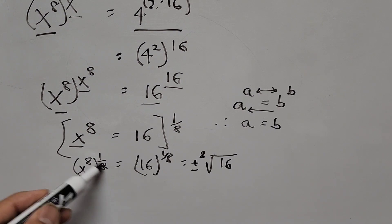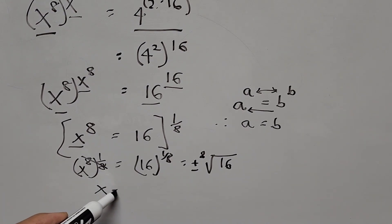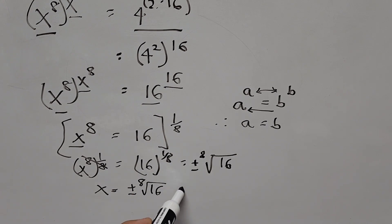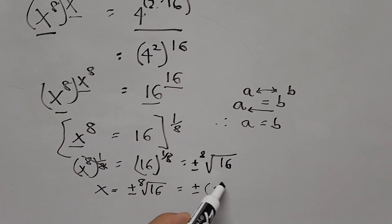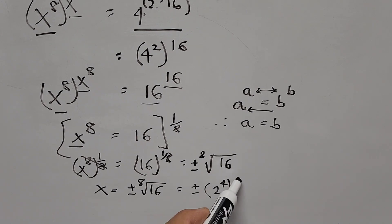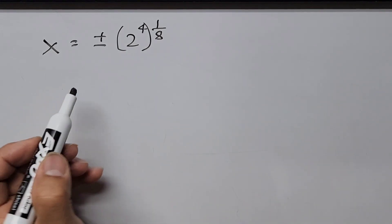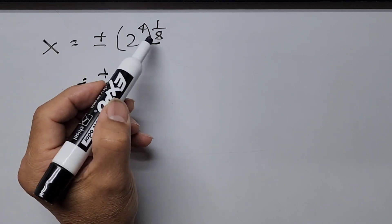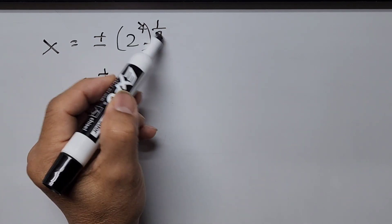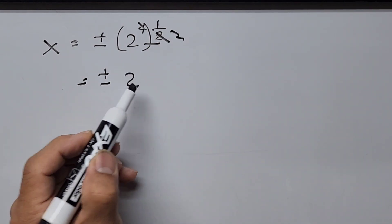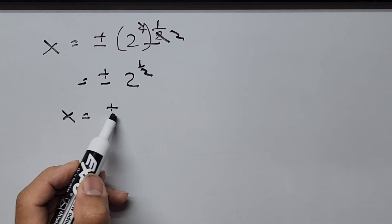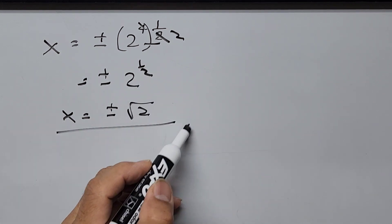On the left-hand side, 8 times 1 over 8 cancels, so x equals plus or minus the 8th root of 16. Now, 16 can be written as 2 to the power of 4, raised to 1 over 8. We simplify: 4 times 1 over 8 equals 1 half. So x equals plus or minus 2 to the power of 1 half, which is plus or minus the square root of 2. That is our final answer.